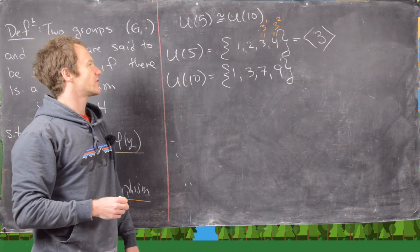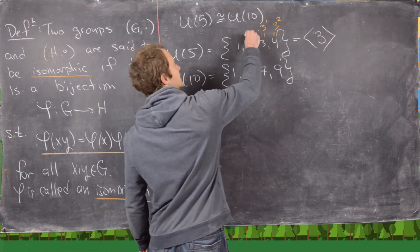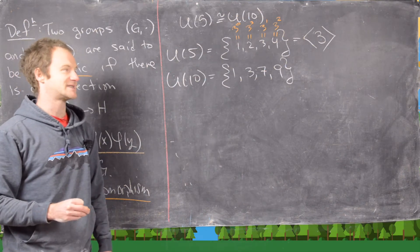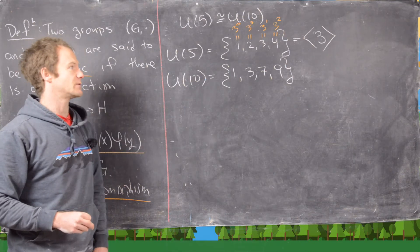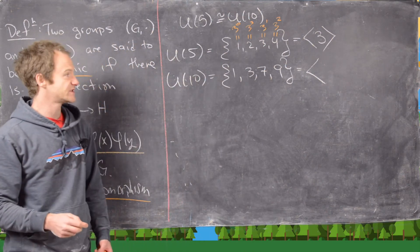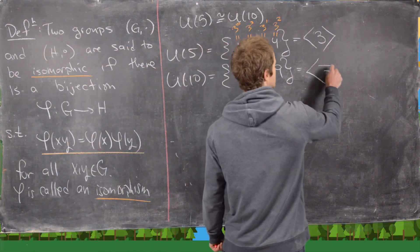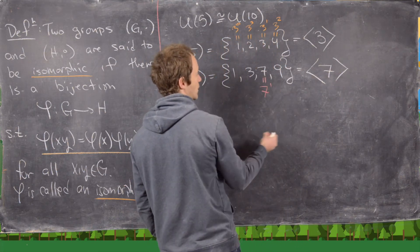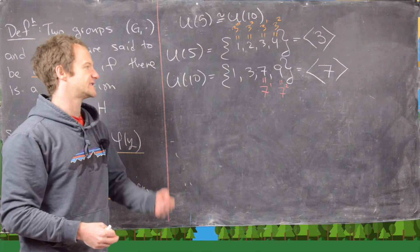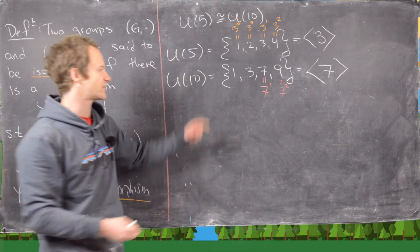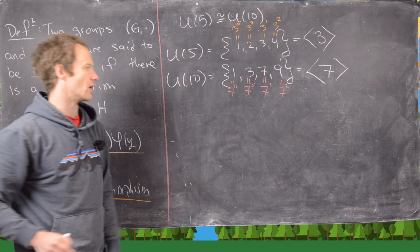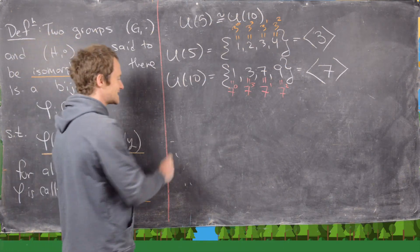We can show both are cyclic groups. U₅ is generated by 3: 3¹ = 3, 3² = 9 ≡ 4, 3³ = 27 ≡ 2, 3⁰ = 1. For U₁₀, 7 is a generator: 7¹ = 7, 7² = 49 ≡ 9, 7³ = 63 ≡ 3 mod 10, 7⁰ = 1.